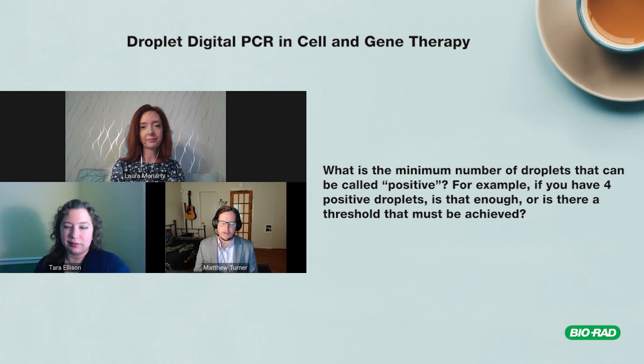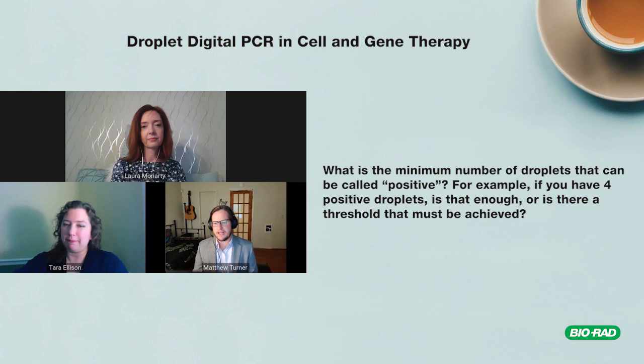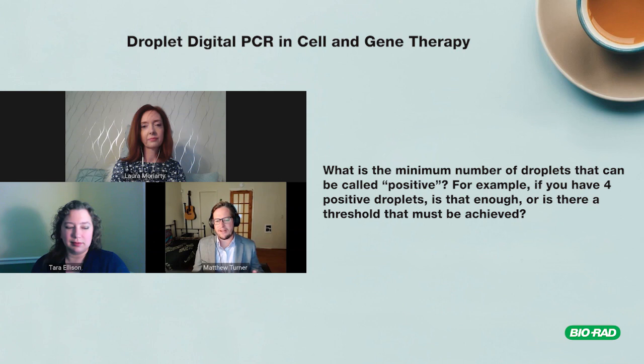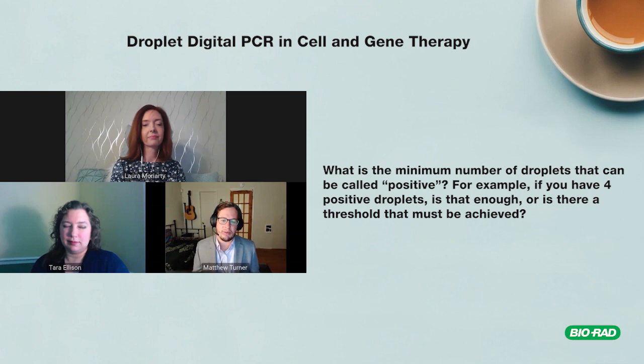It also depends on how rare the event is. If it's a one-in-ten-thousand editing event, having only one or two positive droplets is concerning because we're taking a pipetted sub-sample from a bulk sample. If you load it again, there's a chance you miss capturing that rare event in your pipette tip — not because it's not there, but because things are randomly distributed and we're taking a sub-sample of a very large sample.